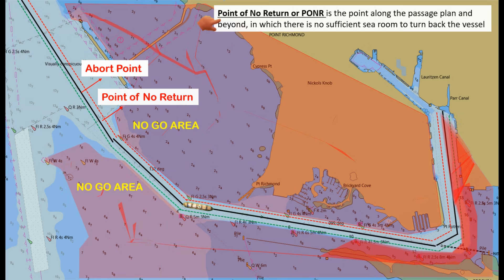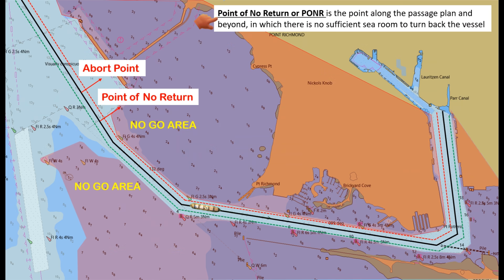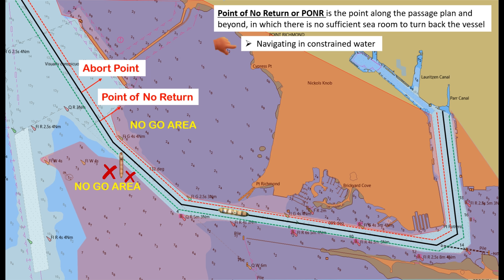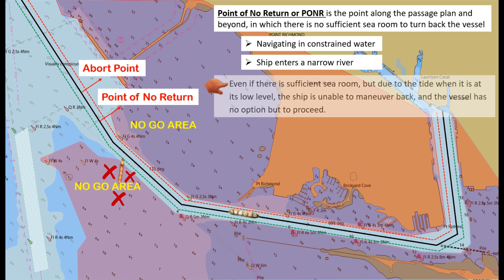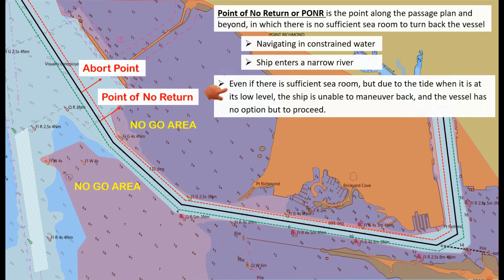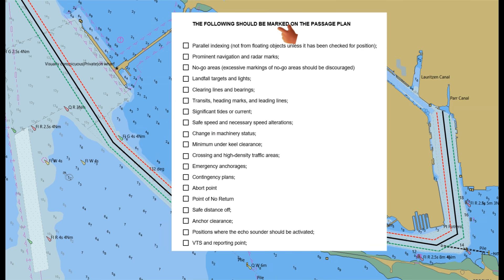The point of no return, or PONR, is the point along the passage plan and beyond which there is no sufficient sea room to turn back the vessel — such as when navigating in constrained water, when the ship enters a narrow river, or when the tide is at its low level and the ship is unable to maneuver back and has no option but to proceed.